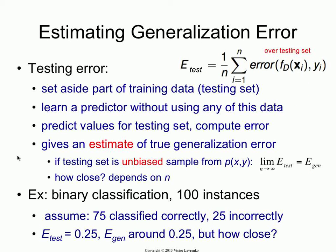So we cannot compute the generalization error. But what we can do is we can approximate it. We have a concept of testing error — the testing error is basically an attempt to get as close to the generalization error as we can. And the way you compute the testing error is you use the same formula as we had for the training error, but you compute it over a special part of your training data called the testing set.